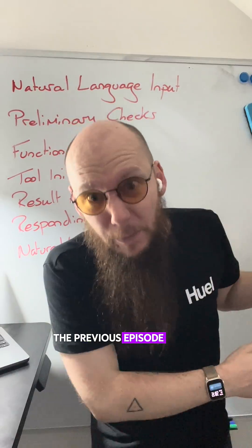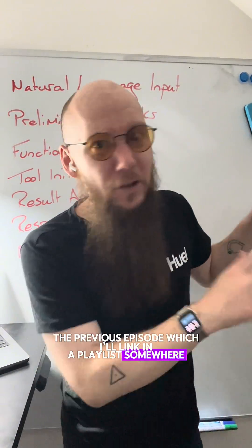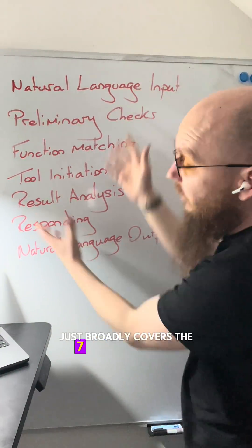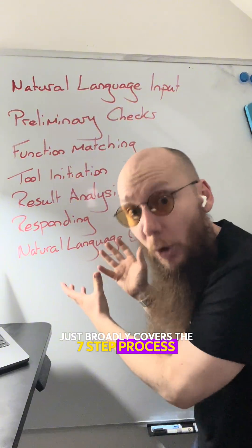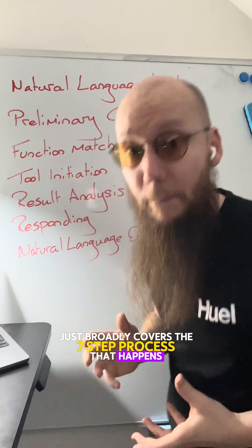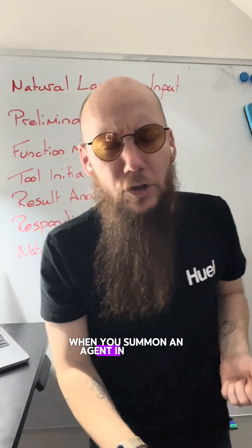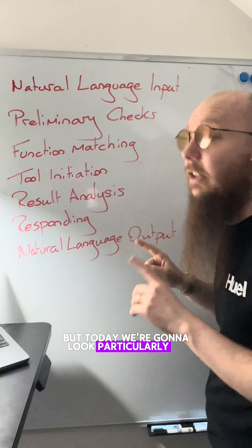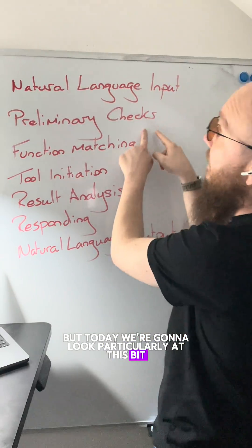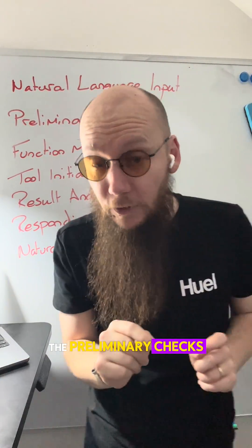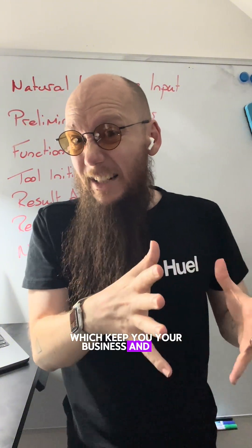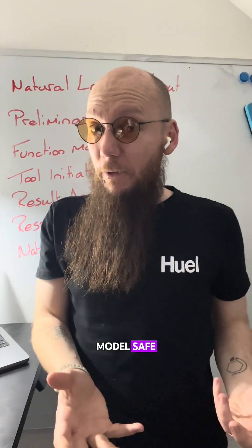The previous episode, which I'll link in a playlist somewhere, just broadly covers the seven-step process that happens when you summon an agent in Copilot. But today, we're going to look particularly at this bit — the preliminary checks — which keep you, your business, and the large language model safe.